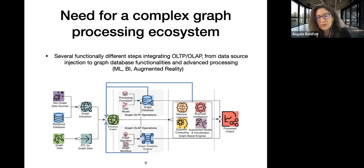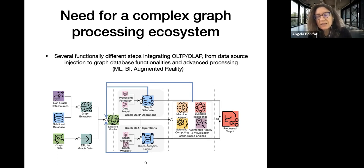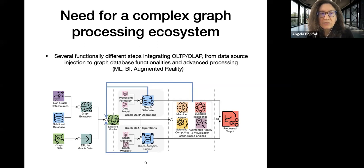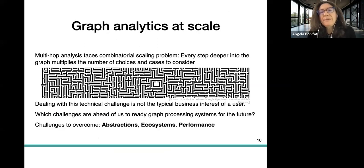You can also have more analytical operations like aggregates, slicing, roll-up, and data cube operations for graphs. This processing is not purely linear; you can have a hybrid between OLTP and OLAP. The results serve more advanced processing such as machine learning, augmented reality, visualization, and business intelligence. As shown by the blue arrow, you can feed results back into the graph processing ecosystem in a loop until you produce the desired results.